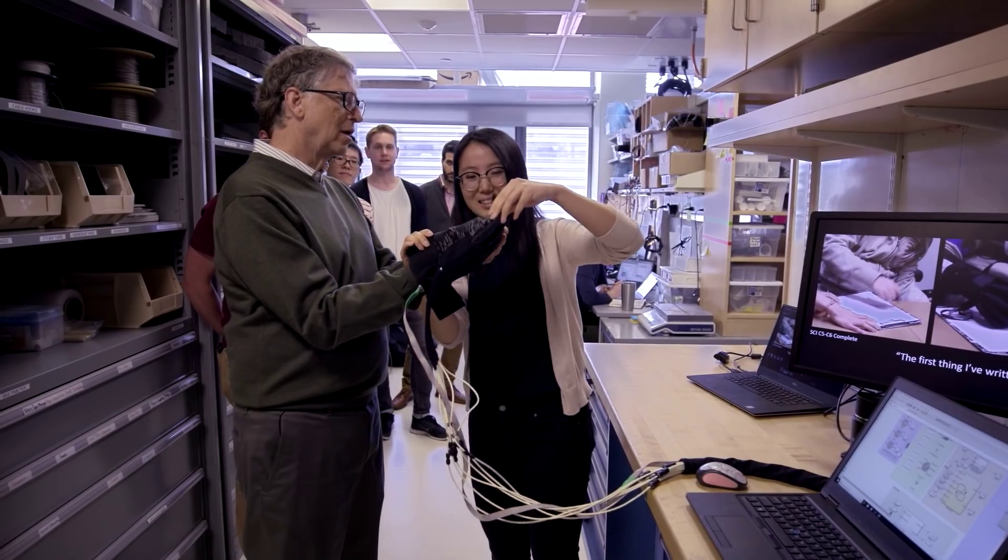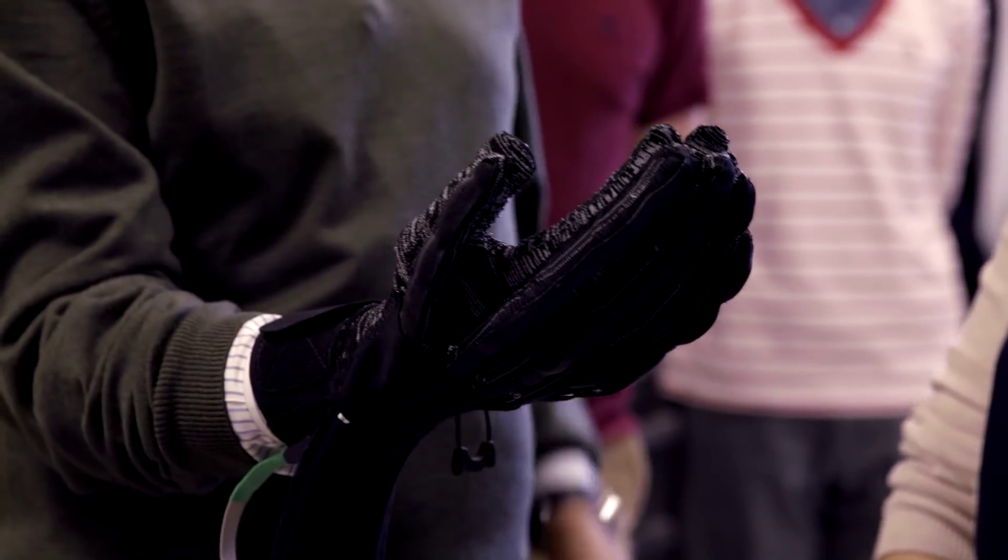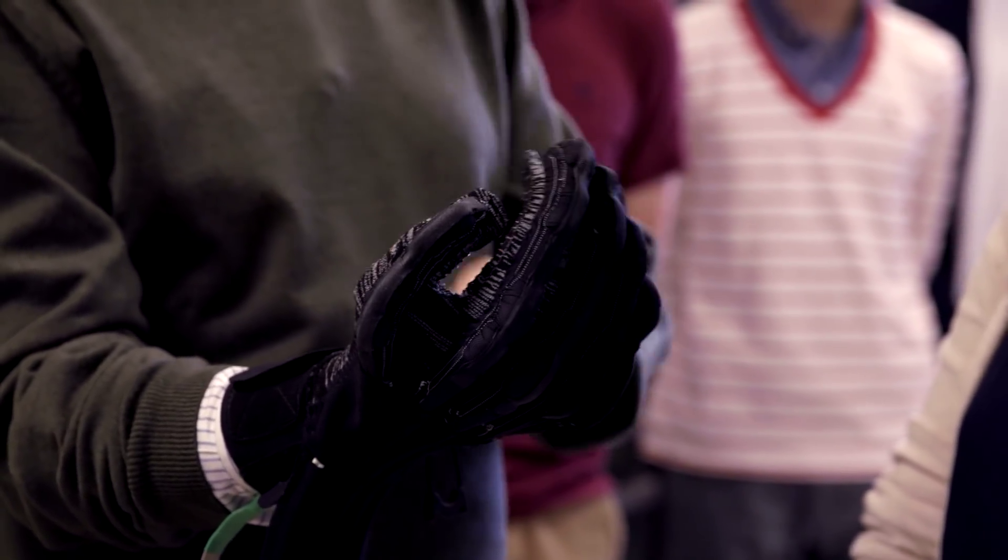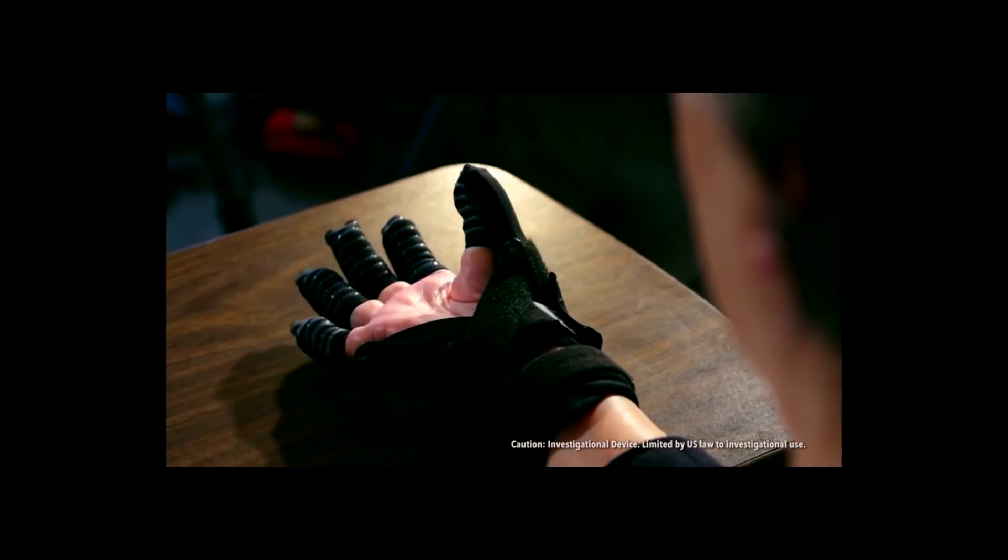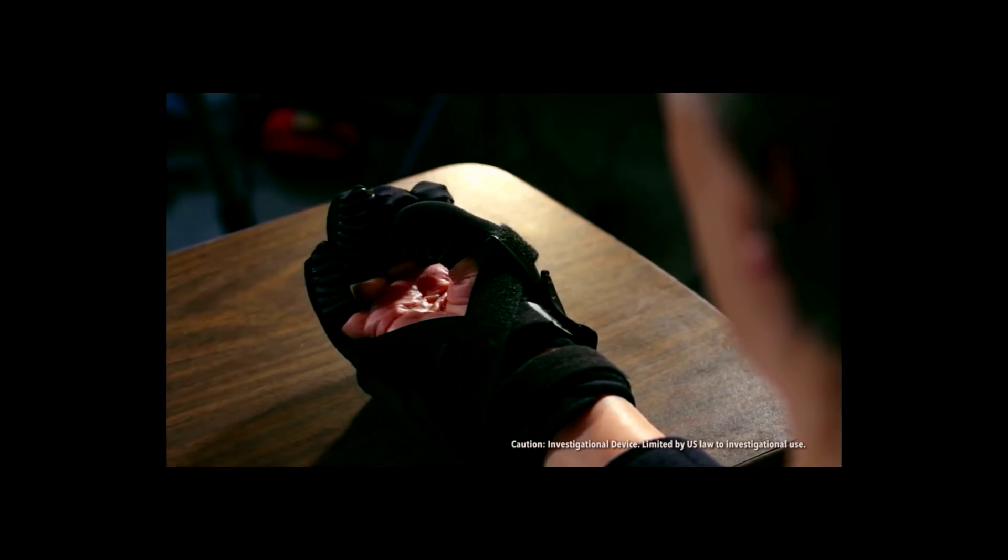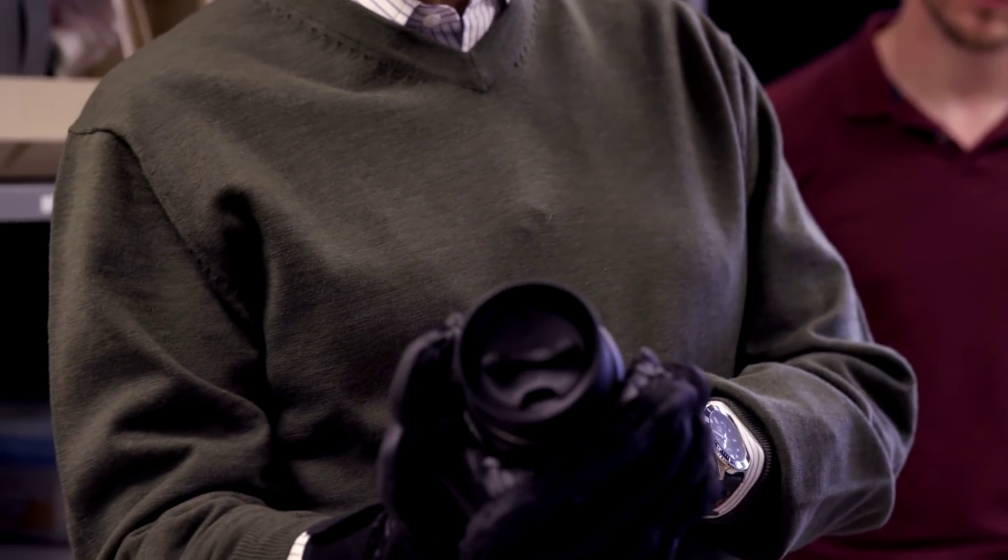When someone has an injury, such as a spinal cord injury, we can restore their grasp function to more normal levels. So they can now cut food because they have the glove, or they're able to write because they have the glove. We think that there's a real opportunity to basically come up with next generation assistive technologies that really eliminate disabilities.